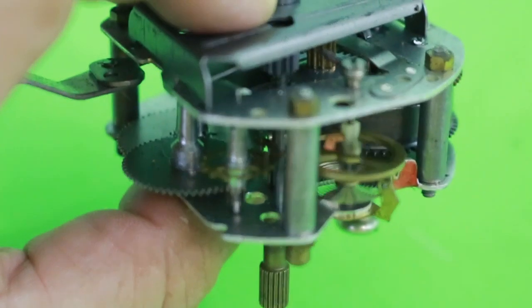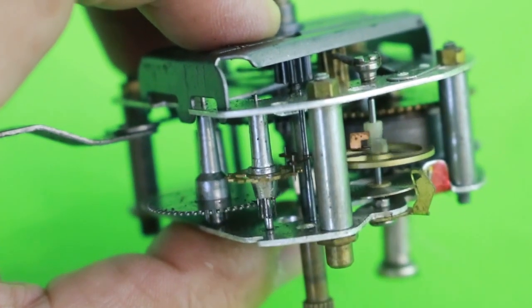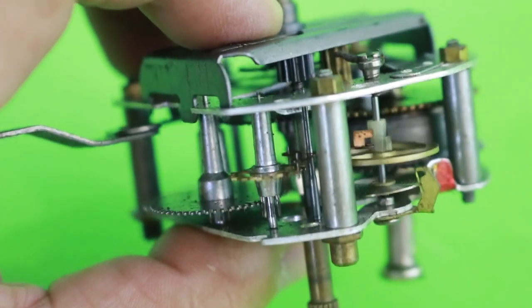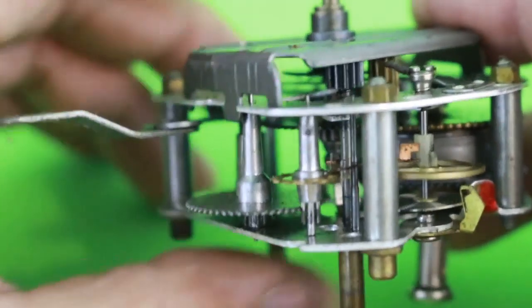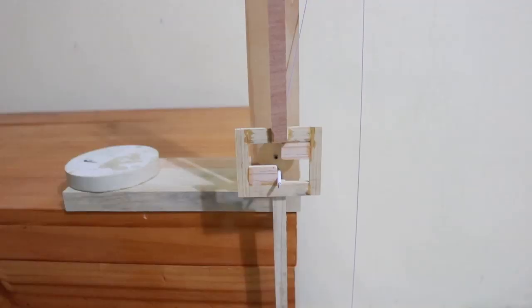It is more complicated, but the principle is the same. The escapement provides a precise time interval that makes the clock function. In the history of horology, many types of escapements were invented, probably more than 100.